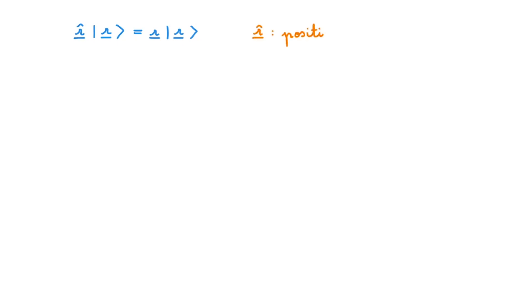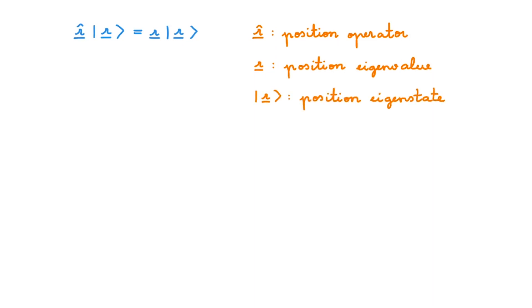The easiest way to define the parity operator is by considering its action on position eigenstates. Remember that the position eigenstates are defined by the eigenvalue equation of the position operator. Although I'm using the same labels for operators and their eigenvalues and eigenstates, which can be very convenient, we have to be very clear about what each symbol represents. So r hat is the position operator, the vector r is the position eigenvalue, and the ket r is the position eigenstate associated with the eigenvalue r.